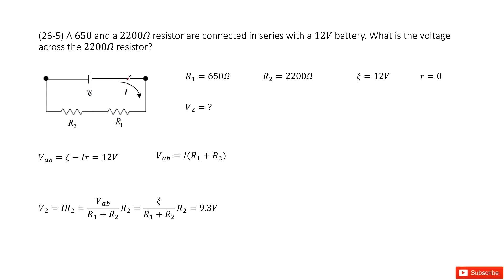And this battery's voltage, so this battery's EMF is given as 12 volts. Ask you to find the voltage across the 2200 ohms resistor. That is, ask you to find the voltage V2.